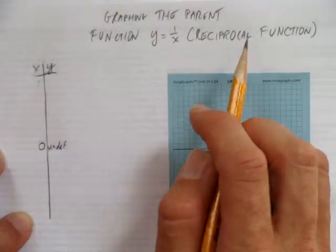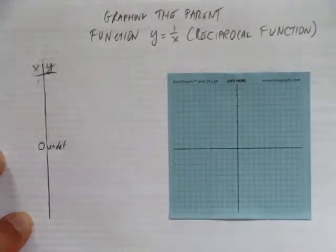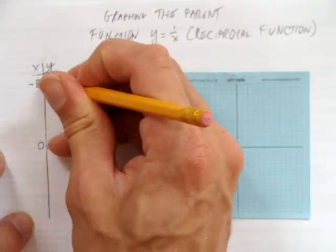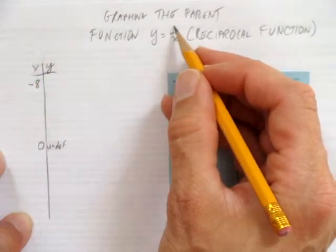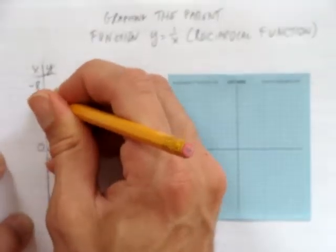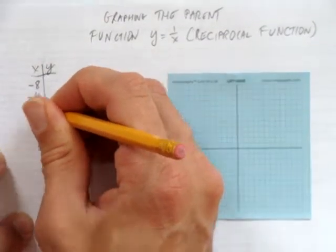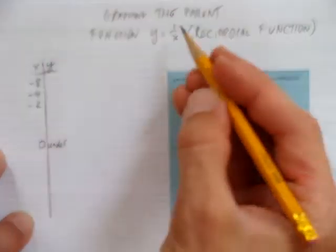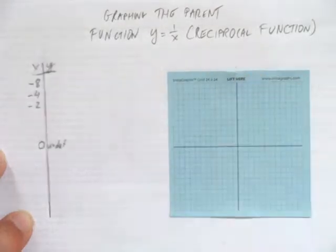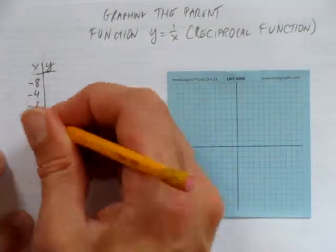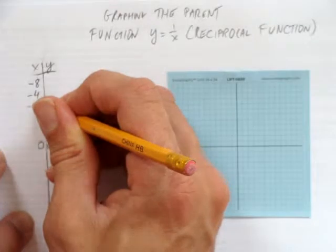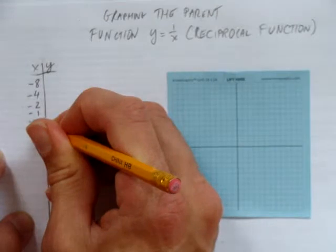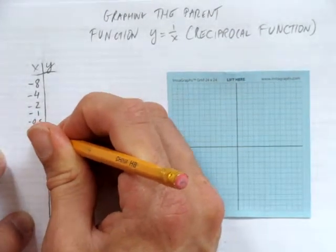The other thing that's very different for graphing the reciprocal function is our choices of x's. What we're going to do is choose numbers that make easy fractions, because they're all going to be fractions. This is going to be 1 over negative 8. We're going to see what happens when we pick negative 8, negative 4, negative 2. You can pick any numbers you want, but if you picked negative 3, you'd get 1 over negative 3, which would be a long repeating decimal. Hard to graph. I'd rather have these numbers: negative 8, negative 4, negative 2, negative 1.